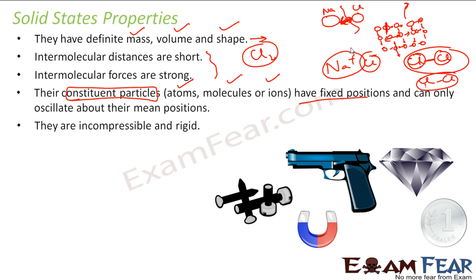And solids are incompressible and rigid. If you press a magnet hard with your hands, you will see that you will not be able to press it. Again, why? Because they are all sturdy and very strong — so they are incompressible and rigid. But if you take water or gas, they are compressible and not that rigid.